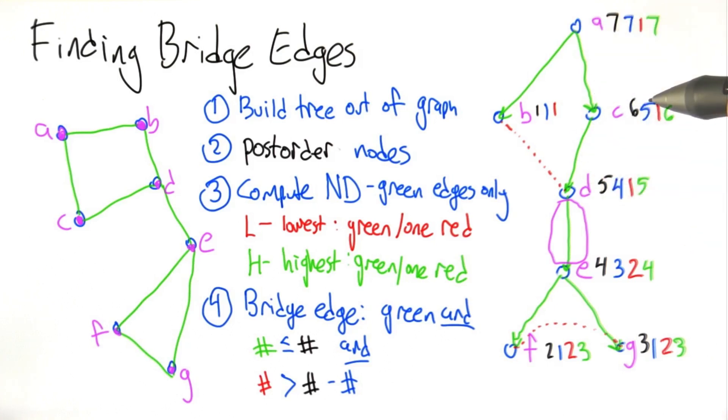How about this guy? We need green less than or equal to black? Yes. We need red bigger than the difference? No. Green number is 5 because the D node is reachable by a non-tree edge. So green less than or equal to black? No.